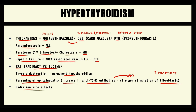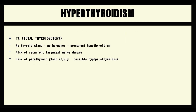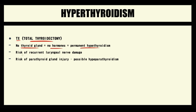The last option is total thyroidectomy. The problem is that surgically removing the thyroid gland means the patient cannot produce thyroid hormones and will be in a permanent hypothyroid state. Additionally, the operation itself risks damage to the recurrent laryngeal nerve, which can affect the voice, and there is a high risk of parathyroid gland injury, which can cause hypoparathyroidism.